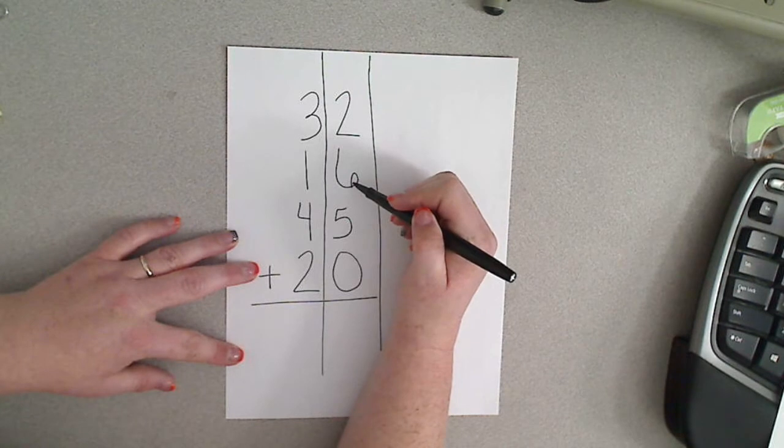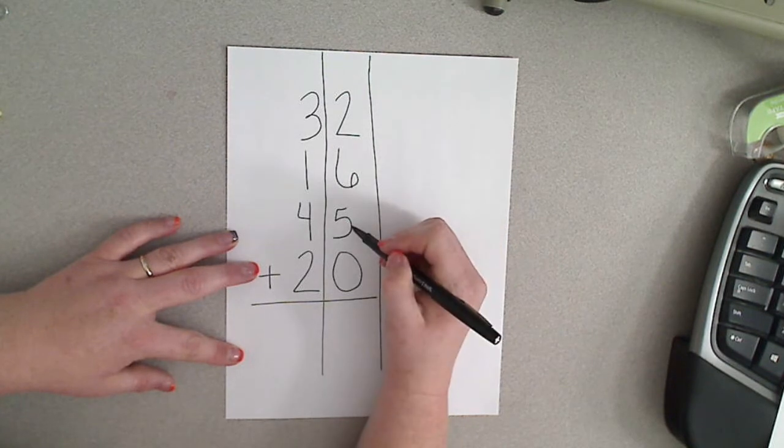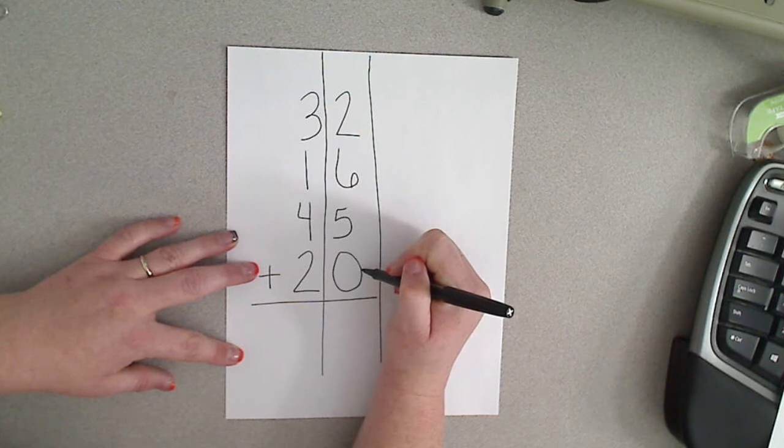So 2 plus 6 is 8, 8 plus 5 is 13, 13 plus 0 is still 13.